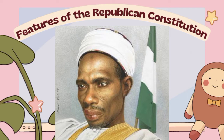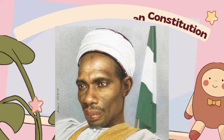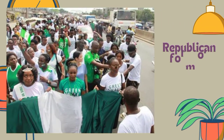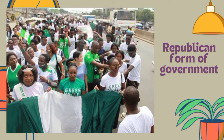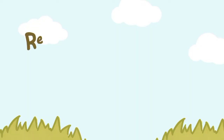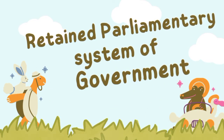What are the various features of the 1963 Republican Constitution? It had both a president as well as a prime minister. One of the major features of the constitution was that it gave room for a republican form of government — a change to a republican form of government backed up with a new constitution, instead of the 1960 independence constitution.